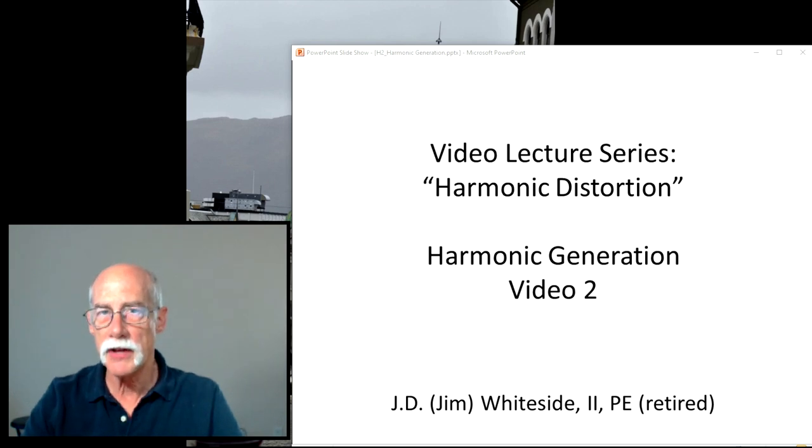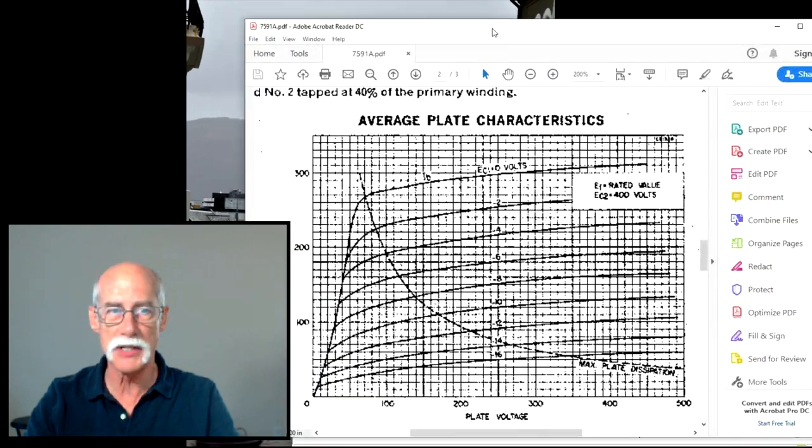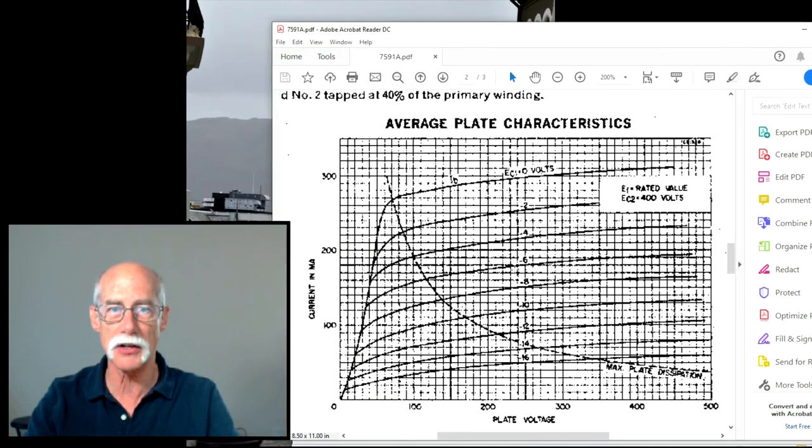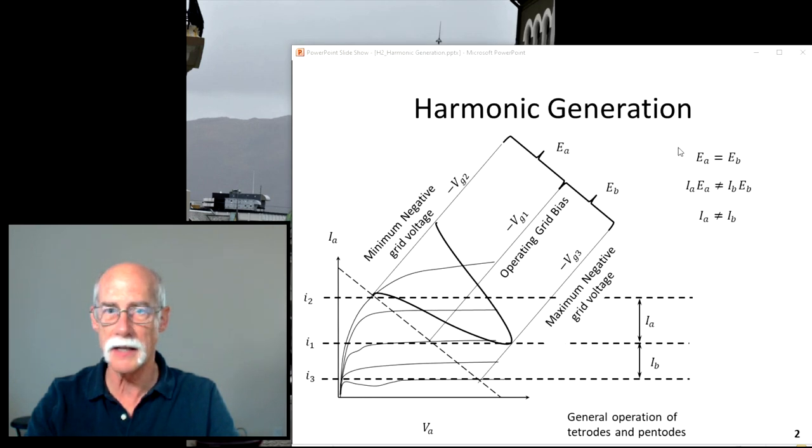Welcome to the second video in my video lecture series on harmonic distortion. Today I'm going to discuss in general terms harmonic generation. Where does it come from? So what I have on screen is a representation of an average plate characteristics curve. This one's a pentode as is the graphic on screen. Let me clarify a few points on here so we can begin the discussion.